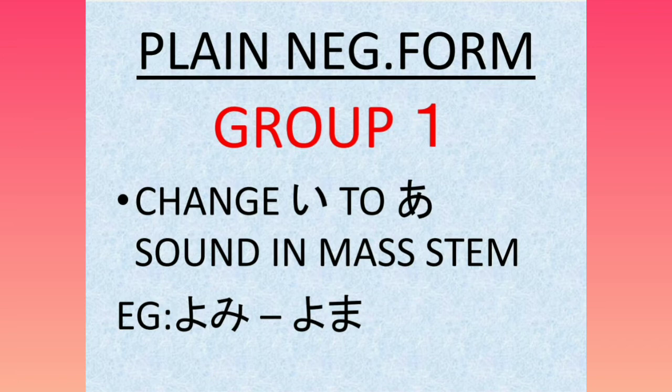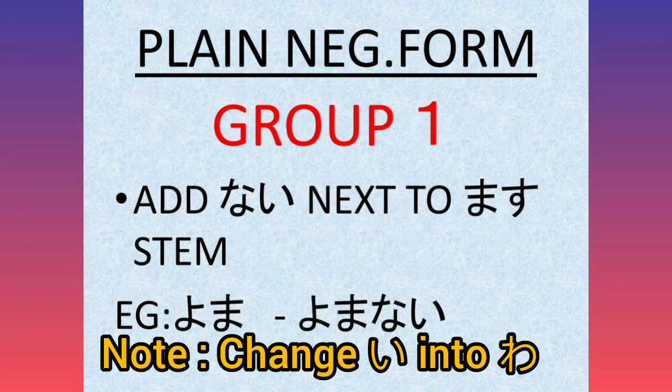This is rule number 2. Now we will see rule number 3. Rule number 1: cancel the masu ending. Rule number 2: change the E sound to the R sound. Rule number 3: change the E into Wa — it's not just a sound, it becomes a new ending. Add nai next to the master stem.